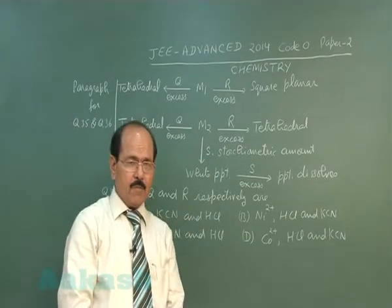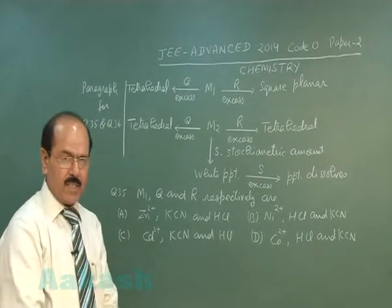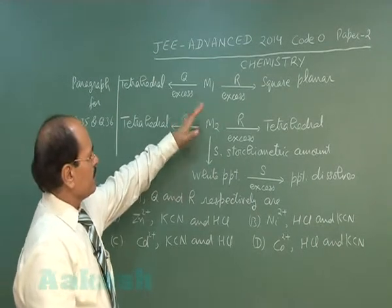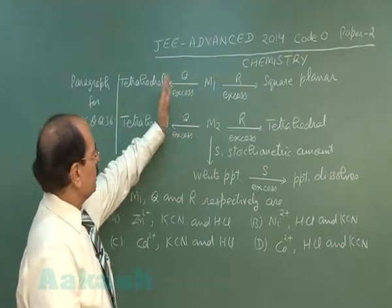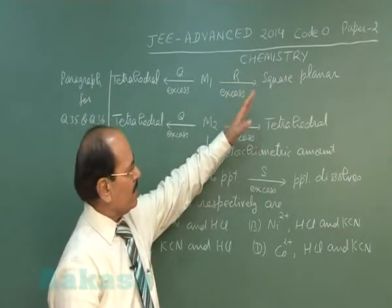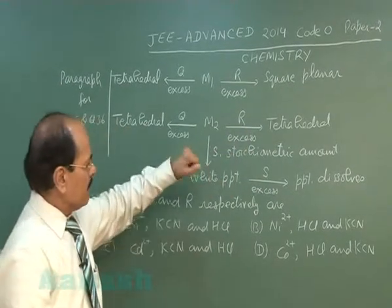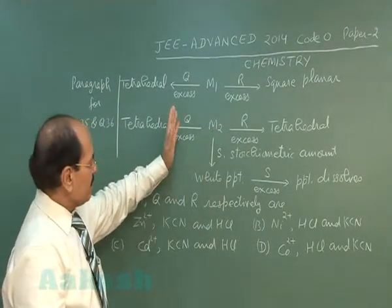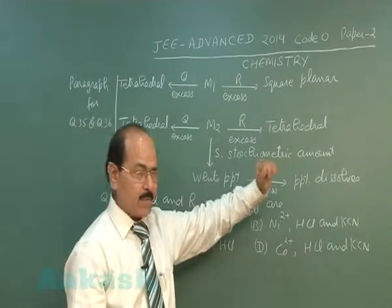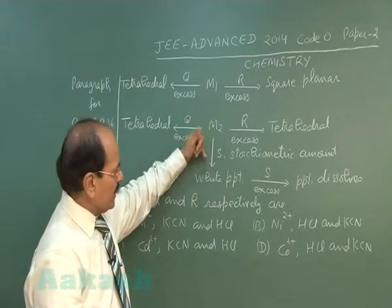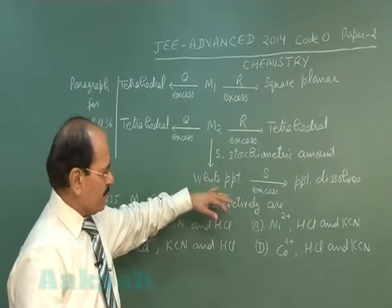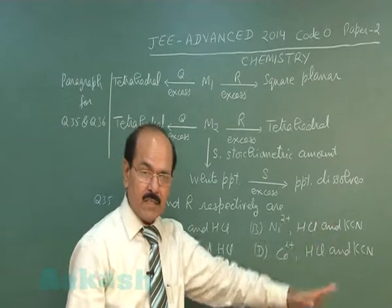The paragraph for questions 35 and 36 states: there is a metal ion M1 which reacts with excess of reagent Q to give a tetrahedral complex, and with excess of reagent R it gives a square planar complex. There is another metal ion M2 which with excess of Q gives a tetrahedral complex. M2 also reacts with reagent S in a stoichiometric amount to give a white precipitate which dissolves in excess of reagent S.